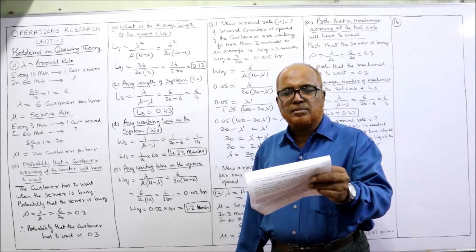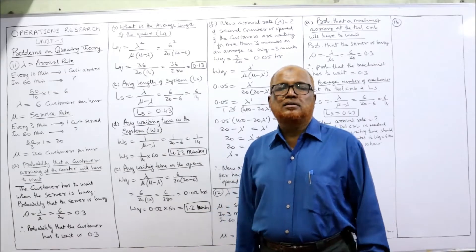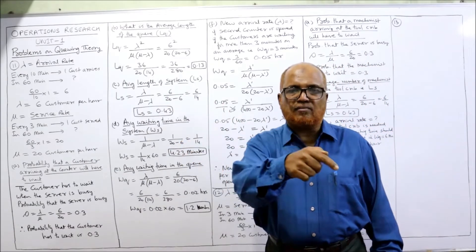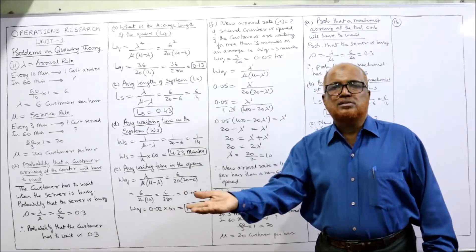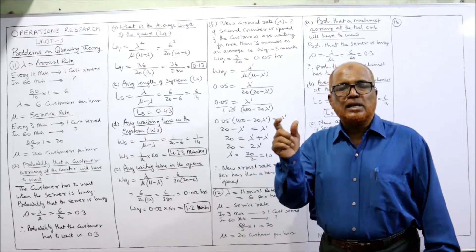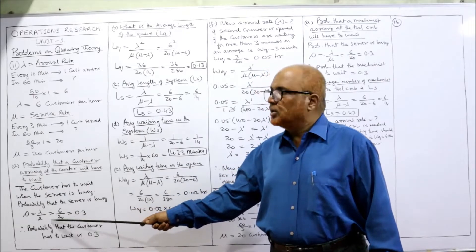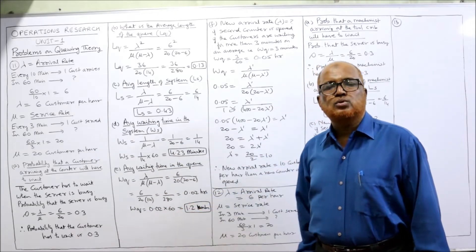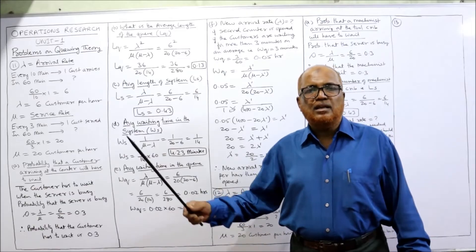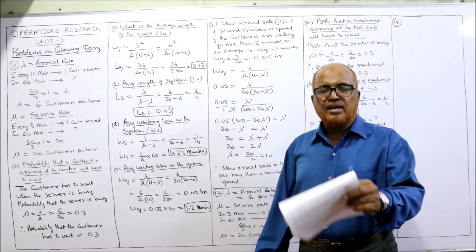The first question: what is the probability that a customer arriving at the counter will have to wait? A new customer has to wait only when the server is busy. So what is the probability that the server is busy? That is the traffic intensity, the utilization factor rho. The formula for rho is lambda divided by mu: 6 divided by 20 equals 0.3. So 0.3 is the probability that the new customer has to wait.